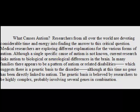In many families, there appears to be a pattern of autism or related disabilities, which suggests there is a genetic basis to the disorder. Although at this time no gene has been directly linked to autism, the genetic basis is believed by researchers to be highly complex, probably involving several genes in combination.